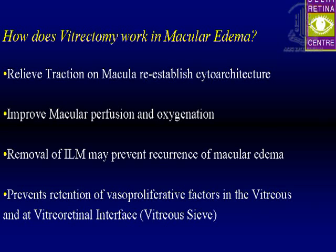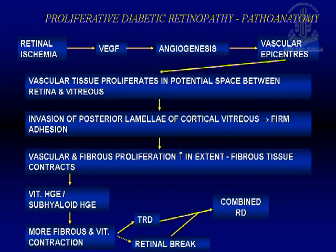Clinical trials also help identify what treatment options are available, what safe treatment protocols exist, and how to intervene. Randomized clinical trials are basically multi-centered, prospective, randomized, controlled, masked, and monitored. You can also have retrospective studies. They are standardized procedures with defined endpoints, adequate sample size, and adequate follow-up protocol. They address certain vital questions and obtain valid answers, which can subsequently form treatment protocols for the disease being studied.